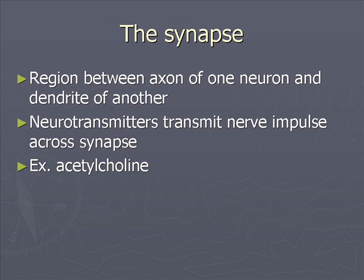In between each neuron is a small gap called the synapse — the space between the axon of one neuron and the dendrite of another. Across this synapse, you have neurotransmitters. Breaking down the word: 'neuro' meaning nerve, 'transmit' meaning to carry a message across. So a neurotransmitter carries chemical messages across the synapse between two neurons. These chemical messages are what cause the nerves to fire and determine what specific message they are sending.